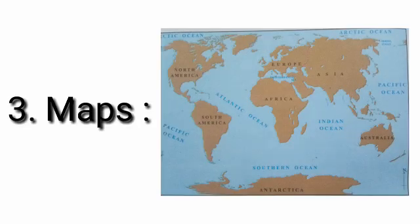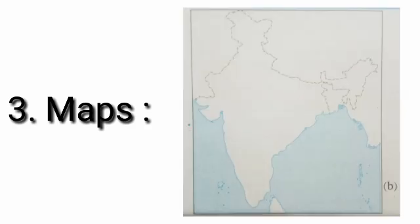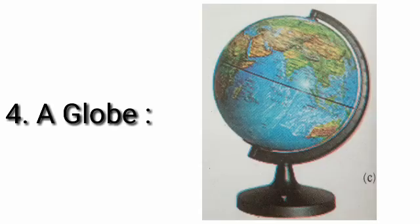Third: maps. Maps are two-dimensional. Maps can be used to study the whole world or also regions of limited extent. Fourth: a globe. A globe is three-dimensional. It is a representative model of the entire earth.